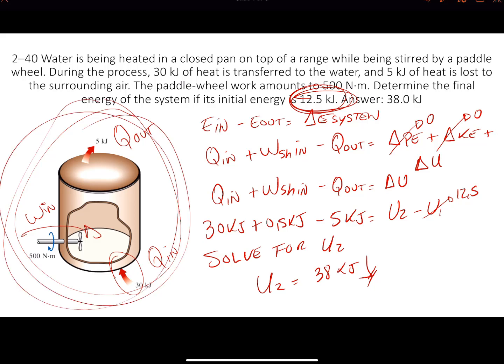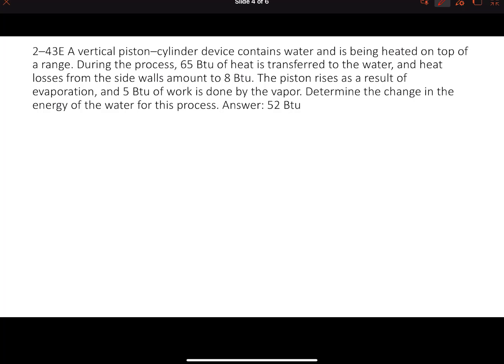This right here could be easily 10 points on one exam, probably the first one, or 5 points in the last exam. But you will be using the first law all the way to the end of the semester. Now we're going to move to the second exercise, and it's 2-43E. This one basically is giving us a lot of information. Let's just read it through. A vertical piston-cylinder device contains water and it's being heated on top of a range. During the process, 65 BTU of heat is transferred to the water, and heat losses from the side walls amount to 8 BTU. The piston rises as a result of evaporation, and 5 BTU of work is done by the vapor. We need to calculate the change in the energy of the water for this process.